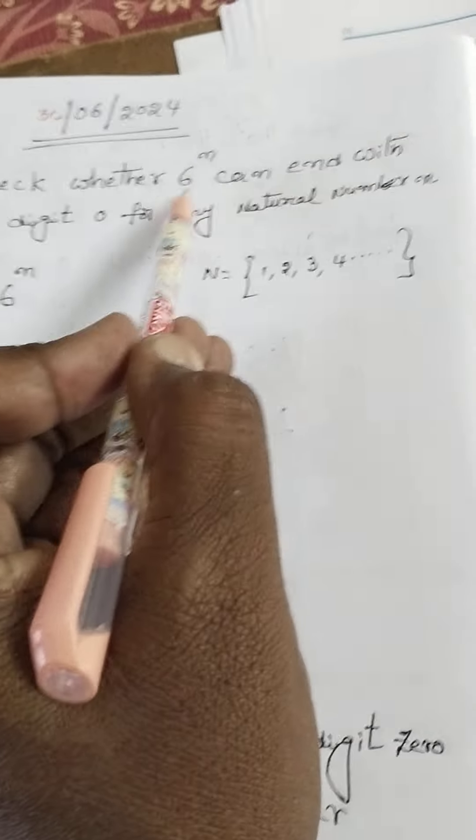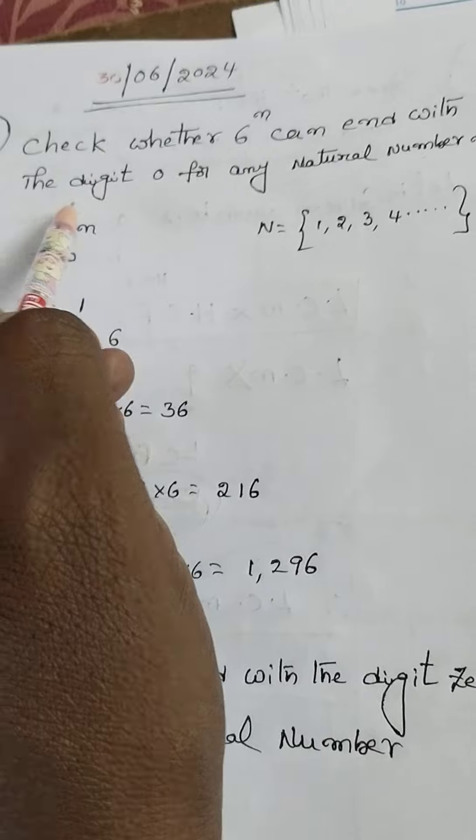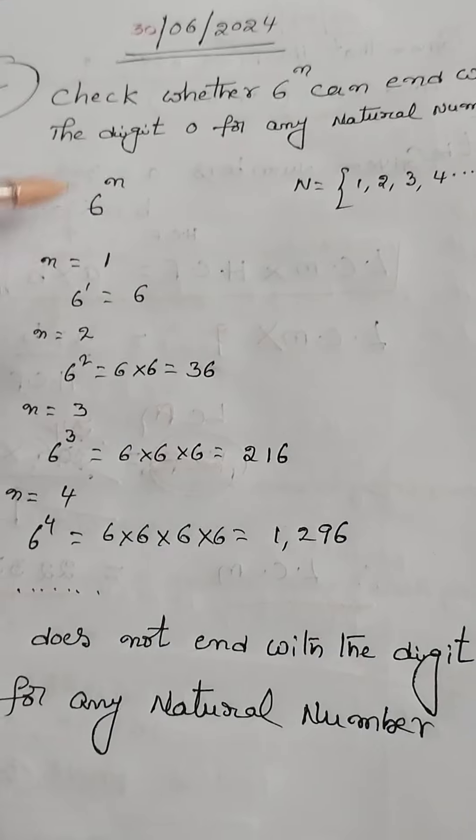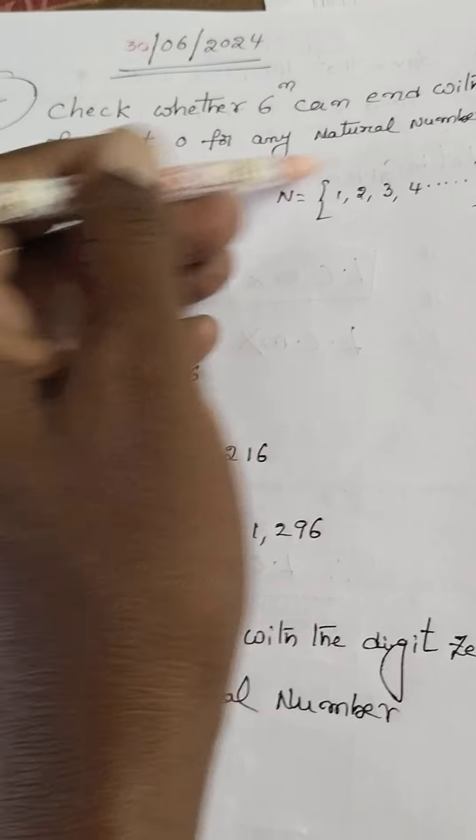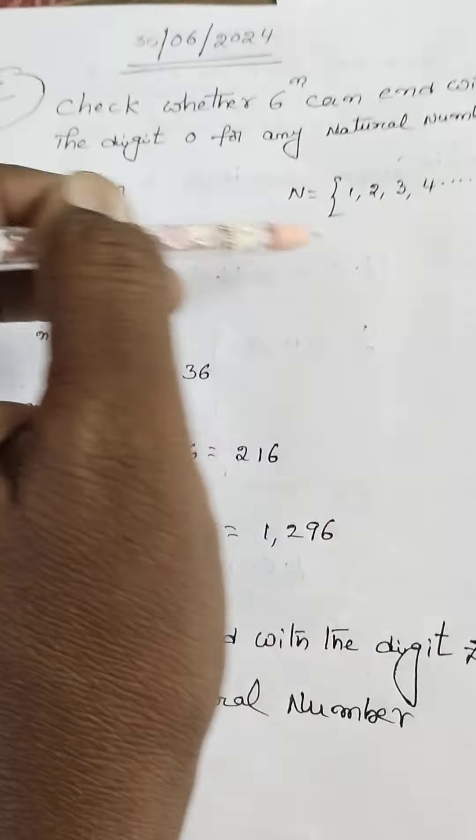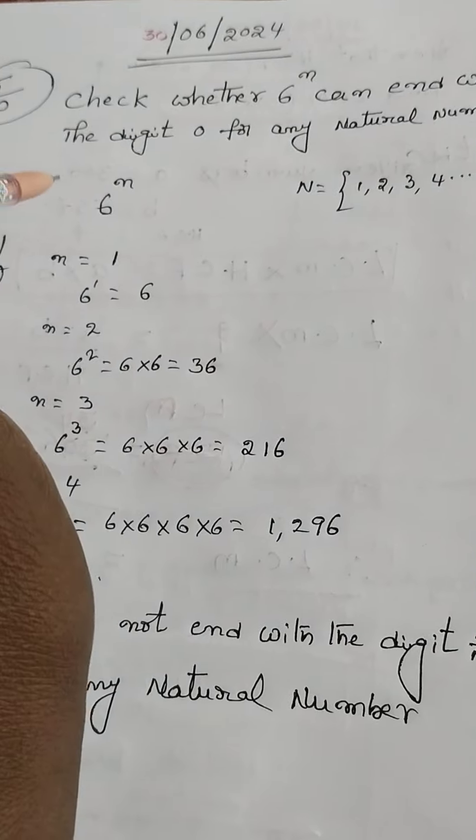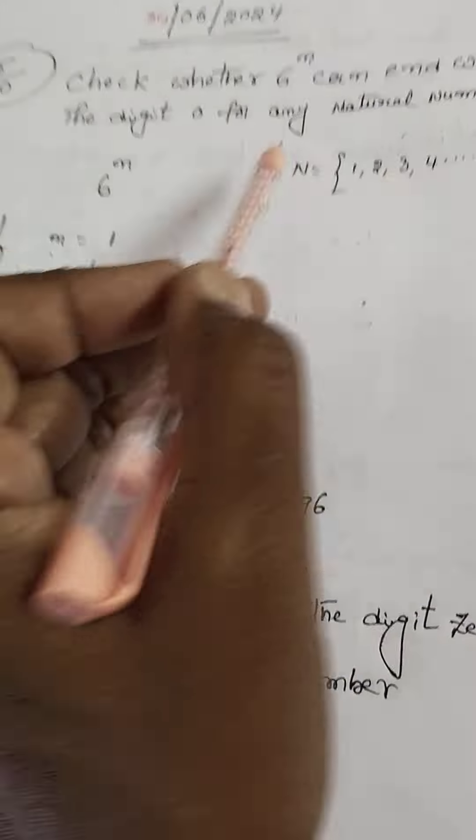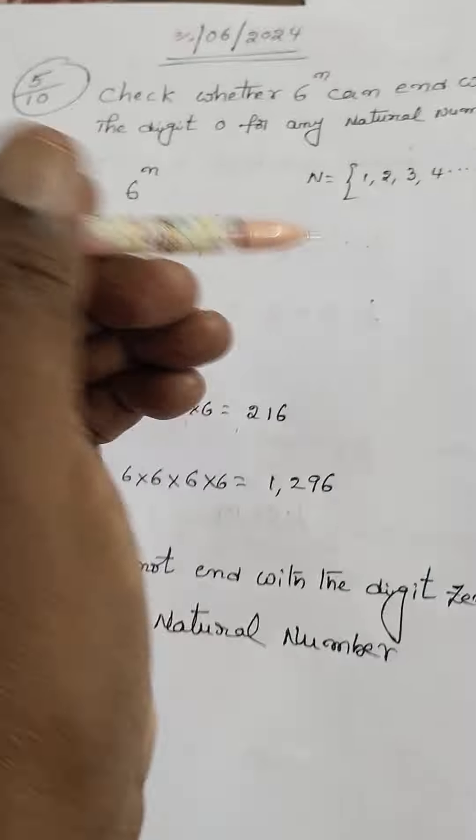Check whether 6 power n can end with the digit 0 for any natural number. 6 power n, where n is any natural number - does the number end with the digit 0 for any natural number?